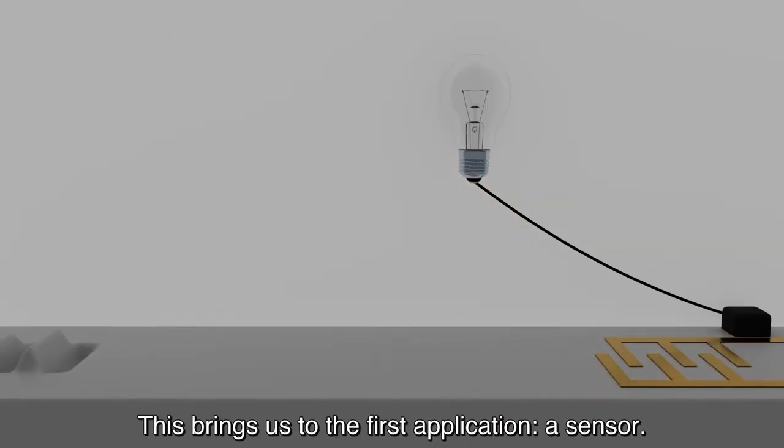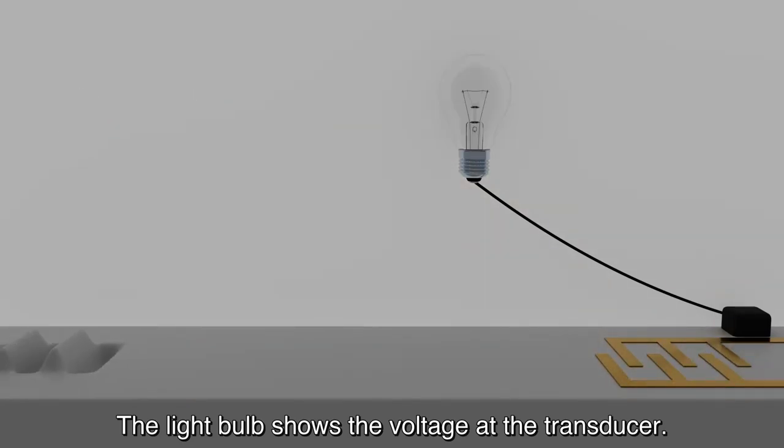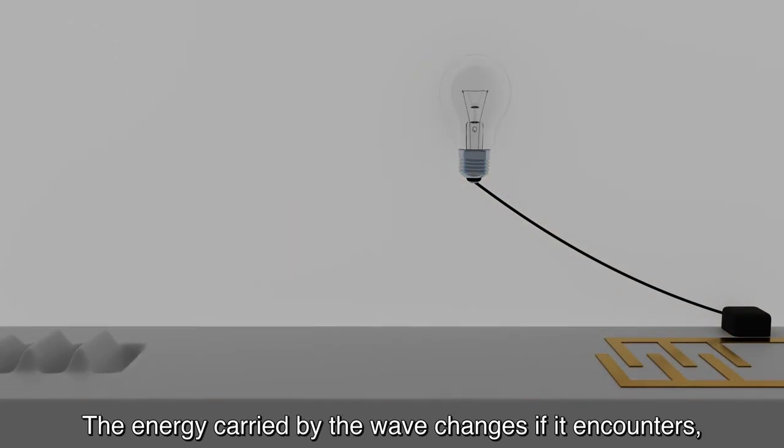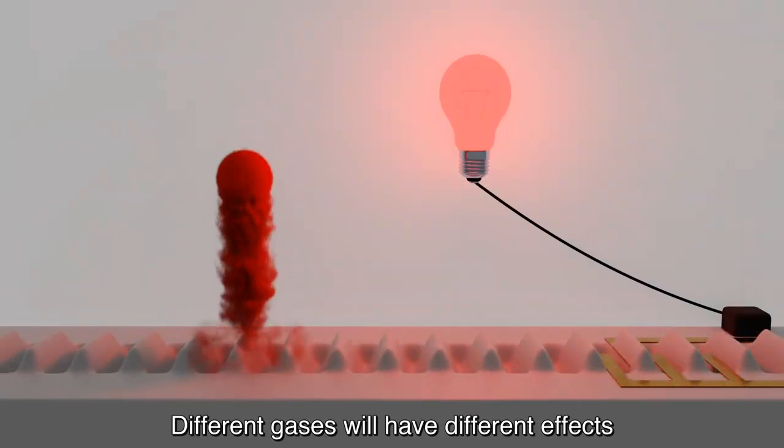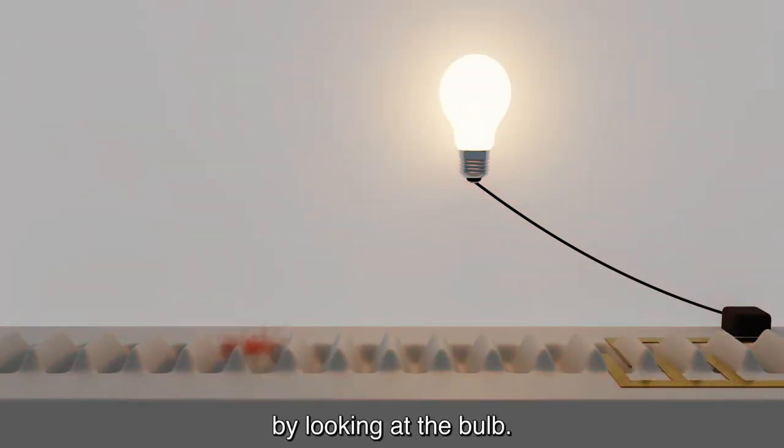This brings us to the first application, a sensor. The light bulb shows the voltage at the transducer. You can see it only lights when a SAW is present. The energy carried by the wave changes if it encounters, say, a gas in its path. Different gases will have different effects, so it is possible to tell which gas interacted with the SAW by looking at the bulb.